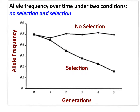This graph displays the frequency of a single allele over time in a population under two conditions: no selection and selection. At time zero, the allele is represented at 50%. Without selection, the frequency of the allele remains mostly the same — random events might alter the frequency slightly. However, when selection occurs, especially directional selection where one phenotype is not well suited to the environment, we can see a change in the allele frequency in the population over time.